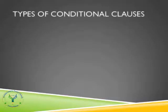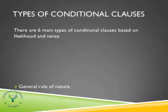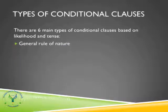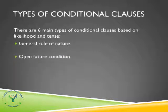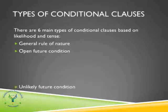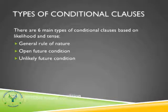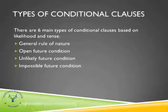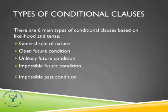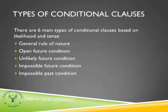Now we will discuss the types of clauses. There are six main types: general rule of nature, open future condition, unlikely future condition, impossible future condition, impossible past condition, and unknown past condition.